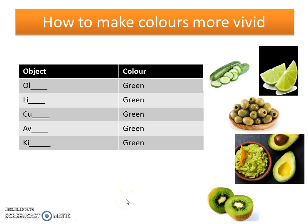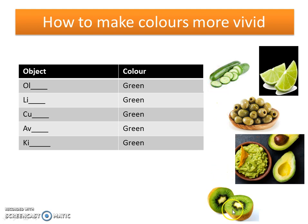The next tip: when you use a colour, use a noun to make it very precise and vivid. For example, all of these fruits are green but they're all slightly different. An olive green is a browny green, a lime green is a zingy highlighter green, an avocado green is creamy and light, a cucumber green is fresh, and a kiwi green is really deep green. Thinking of a fruit or an object from nature and placing the noun before the colour works really well.